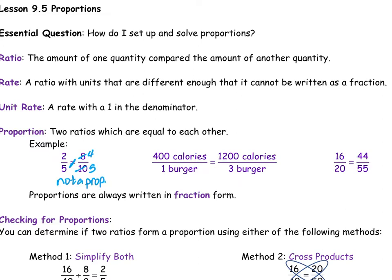So we did not an example. If it's a proportion, they have to be equal to each other. If it is a proportion, then once they're simplified, they would be totally equal to each other.